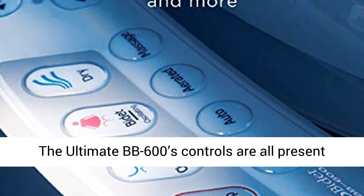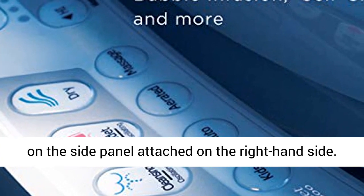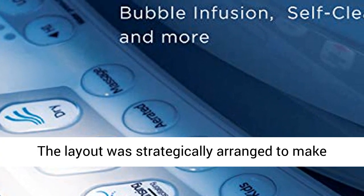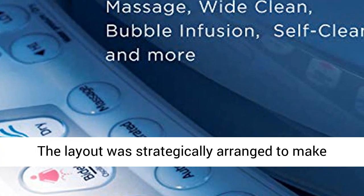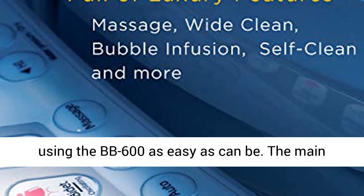The Ultimate BB600's controls are all present on the side panel attached on the right-hand side. The layout was strategically arranged to make using the BB600 as easy as can be.